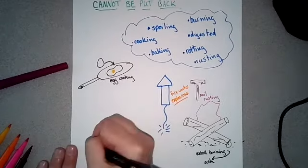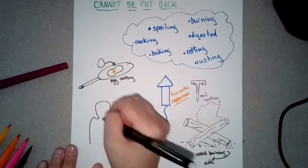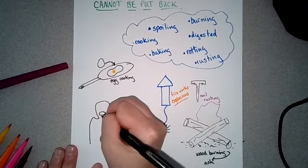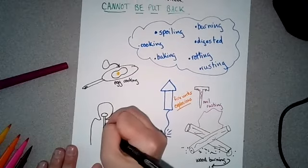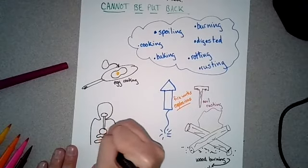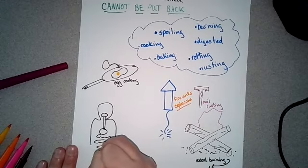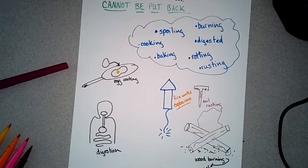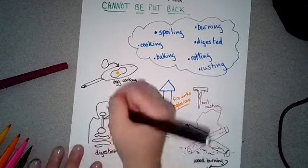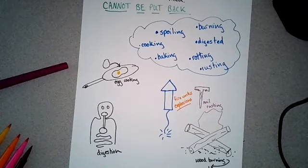All right, don't laugh at this drawing. This is you. This is your mouth. This is your esophagus. This is your stomach. These are your intestines. Okay, what is that process called? Digestion. Very good, digestion. That cannot be undone, thank goodness. Oh, here, give yourself some eyeballs. Look there. Cannot be undone.